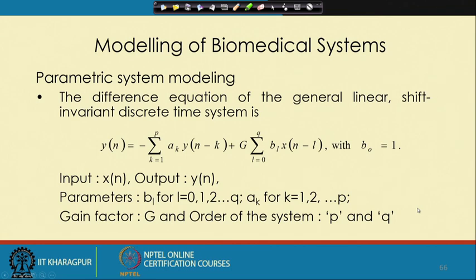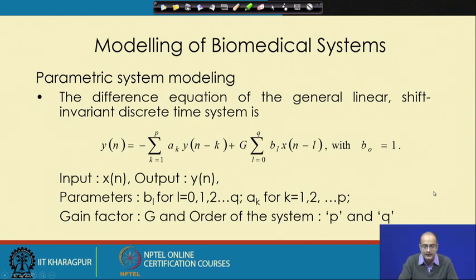We have a gain factor G that determines how much magnification would happen, and the order of the system is given as P and Q. P is the number of A_k terms and Q is the number of B_l terms.